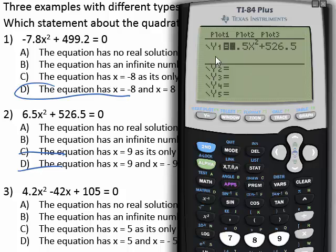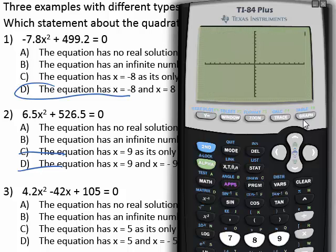Now when I typed the y equals I typed out the equation 6.5x squared plus 526.5 and hit graph. I noticed it didn't really show up on the graph at all. So there's a way to fix that.